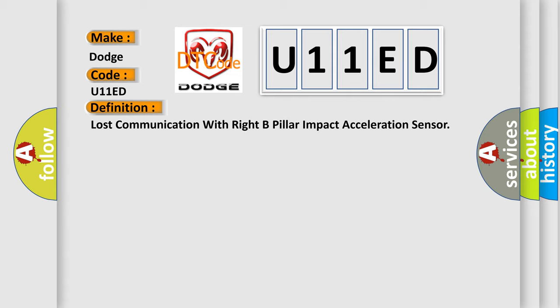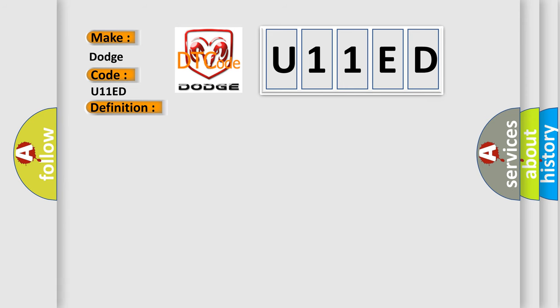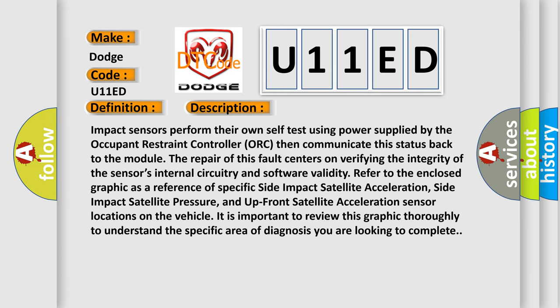The basic definition is: Lost communication with right B-pillar impact acceleration sensor. Impact sensors perform their own self-test using power supplied by the occupant restraint controller (ORC), then communicate this status back to the module. The repair of this fault centers on verifying the integrity of the sensor's internal circuitry and software validity. Refer to the enclosed graphic as a reference of specific side impact satellite acceleration, side impact satellite pressure, and up-front satellite acceleration sensor locations on the vehicle. It is important to review this graphic thoroughly to understand the specific area of diagnosis you are looking to complete.